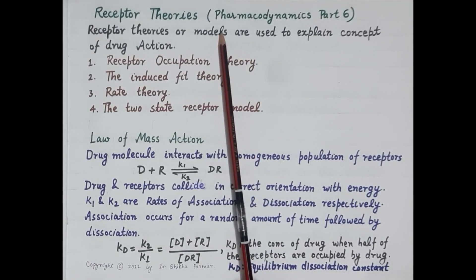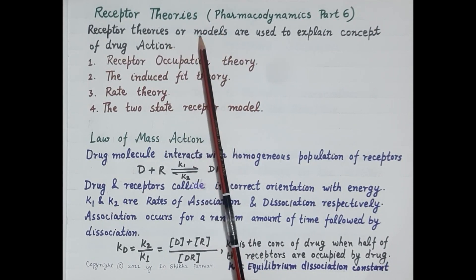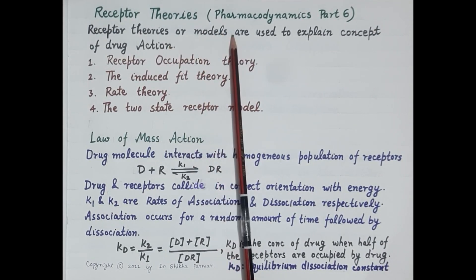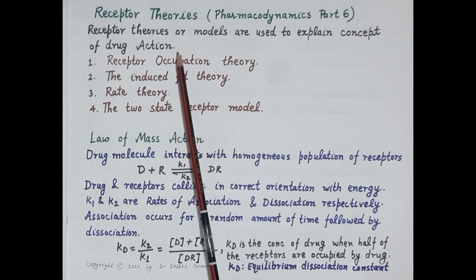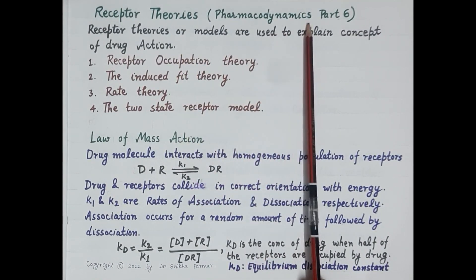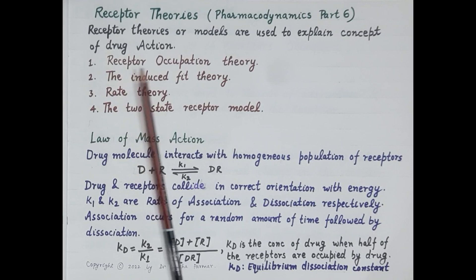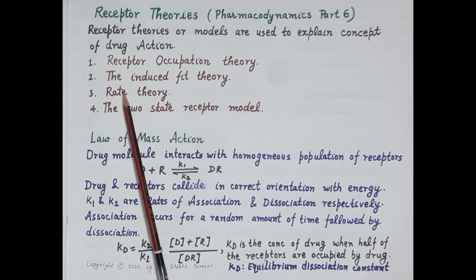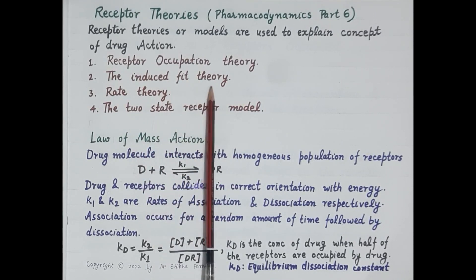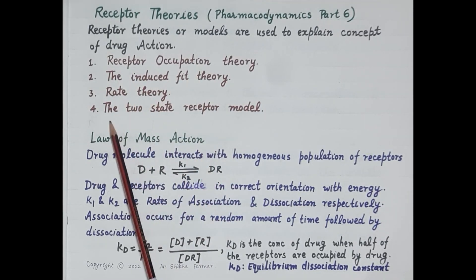Hello students. In today's video we are going to study some very important receptor theories and models that are used to explain the concept of drug action. This video is the sixth in the series of videos on pharmacodynamics. The theories we are going to discuss here are: receptor occupation theory, the induced fit theory, rate theory, and the two-state receptor model.